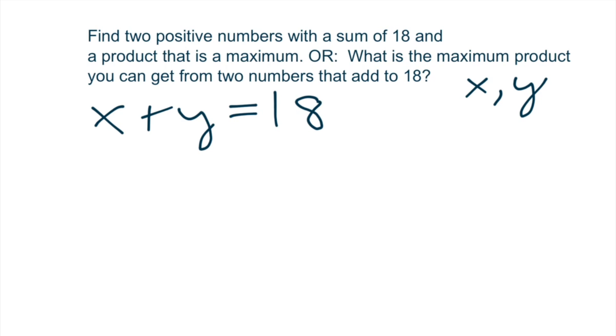And what would the product of these two numbers, these unknown numbers, be? Well, it's also pretty straightforward. It would just be x times y. And the goal here is to take the derivative of the product and set it equal to zero. But before we do that, we want to substitute in for either the x or the y, because we have three variables in this product equation and we only want two.